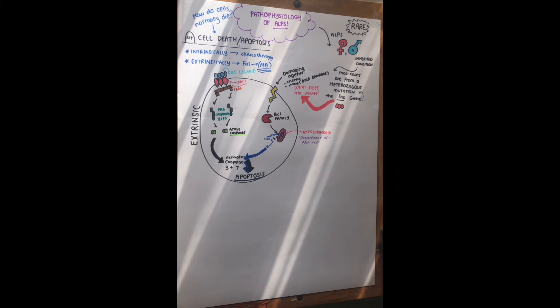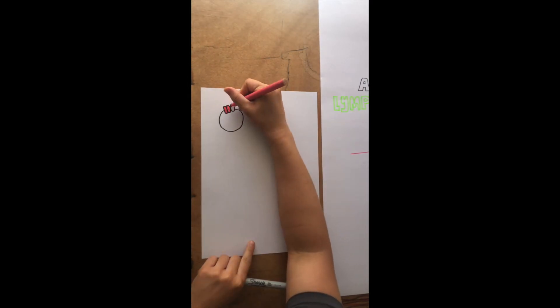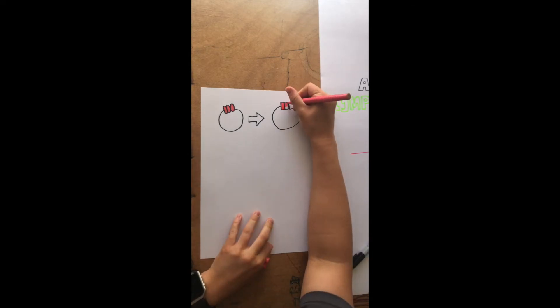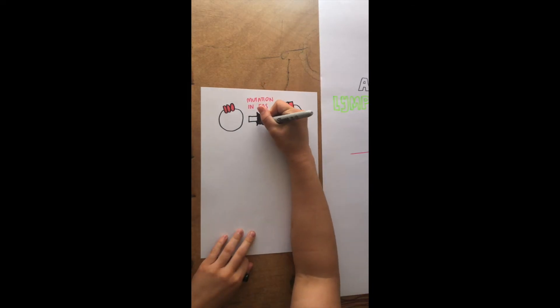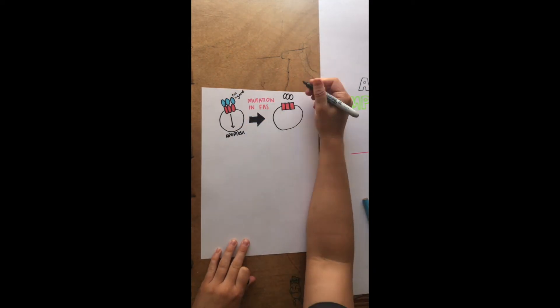So to summarize, if we have the FAS, and the FAS ligand binding to it, we will have apoptosis. But if we don't have the FAS ligand binding to the FAS, there'll be no apoptosis, so the cell will not die. And before I continue with going further, when there is a mutation in FAS, this means that the FAS ligand could bind to the cell, but it won't die because there's a mutation, so the FAS isn't working to its best ability. So this is when we could get an accumulation of cells.